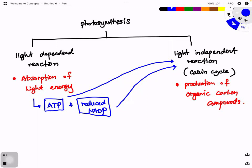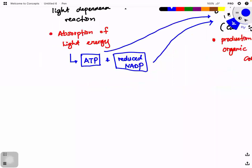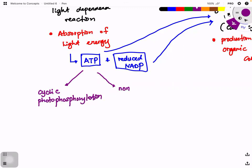Now, where does ATP formation actually take place? There are two pathways that help the chloroplast produce ATP: one is called cyclic photophosphorylation, and the other is non-cyclic photophosphorylation.